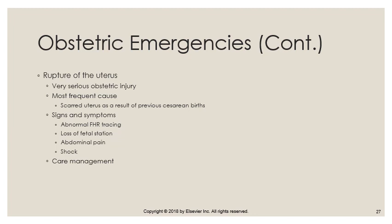With uterine rupture, an emergency cesarean section is required immediately to preserve both maternal and fetal life. Signs and symptoms include abnormal fetal heart rate tracing, loss of fetal station, abdominal pain, and shock.